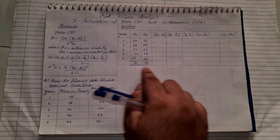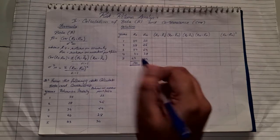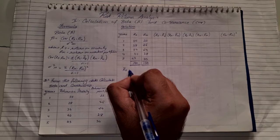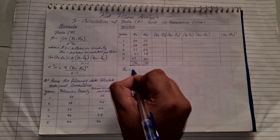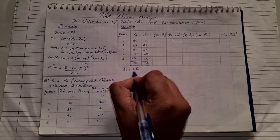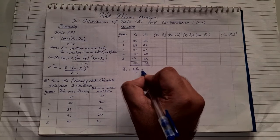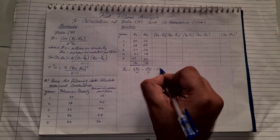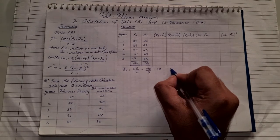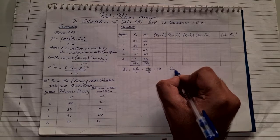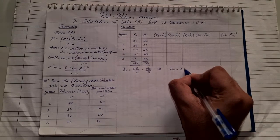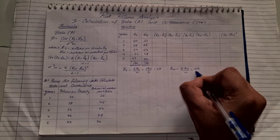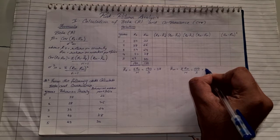Once we have the total of return on security and market, the next step is to find R̄S, the average of return of security, which is summation of RS upon number of years. This comes to 190/5, which is 38. Similarly, we need to find R̄M, the average of RM total upon N, which is 130/5, which comes to 26.